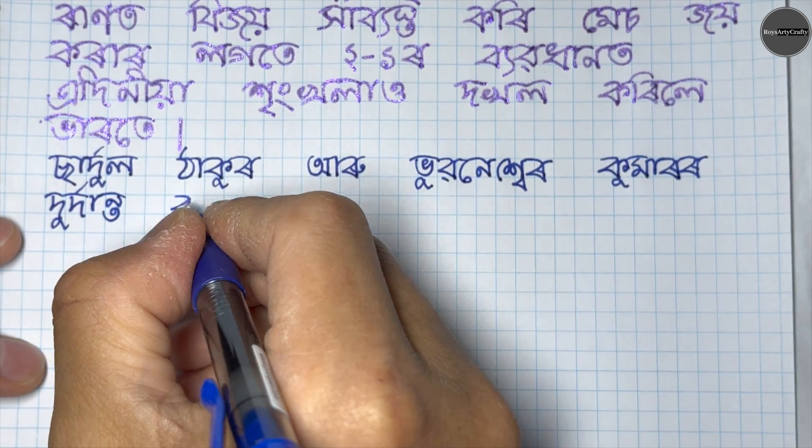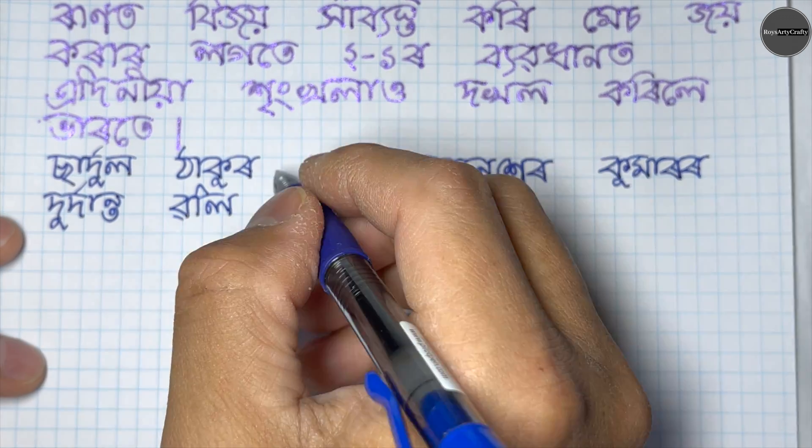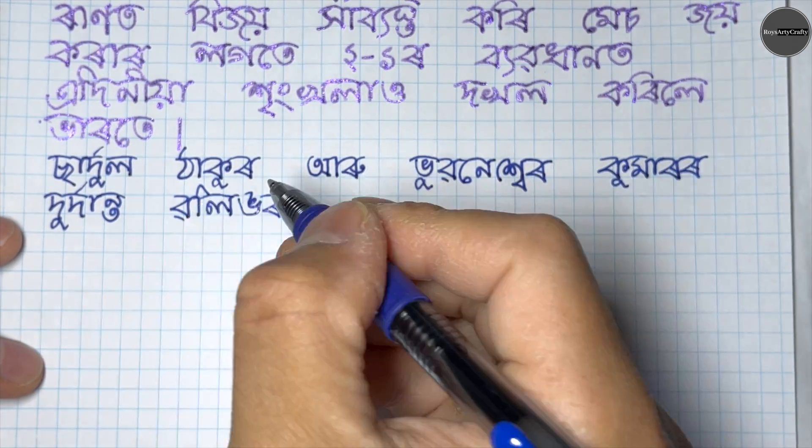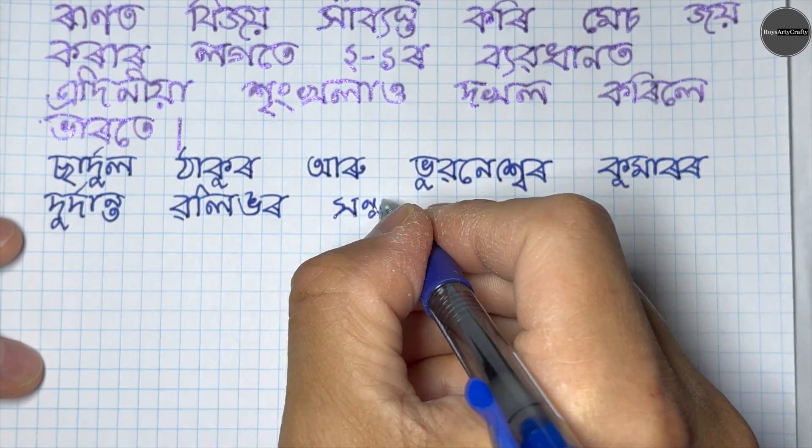If you are writing on graph paper, you will have to practice spacing, size, straight lines. This is the best practice. If you are writing on graph, you will practice the graph.